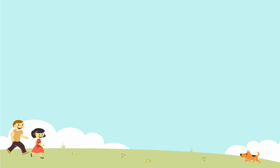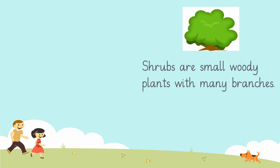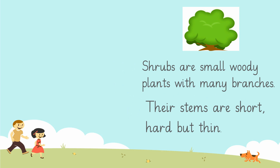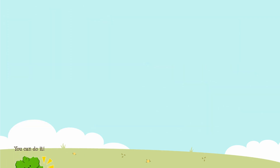Let's learn about shrubs. Shrubs are small woody plants with many branches. Their stems are short, hard, but thin, so they can be broken easily. Do you know which can be examples of shrubs? Let's have a look at the rose and cotton plants — they are the examples of shrubs.